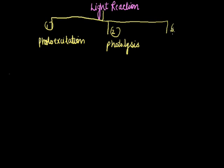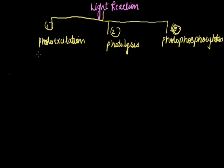And the third step is called photo-phosphorylation. Photo-excitation involves the receiving of light in the form of packets called photons. During this process, the chlorophyll molecule receives sunlight in the form of small energy bundles called photons. After receiving these photons, the chlorophyll molecule becomes excited to a higher energy level.